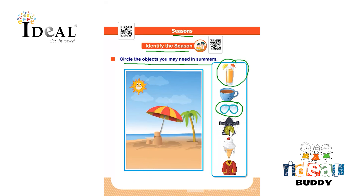Next is a raincoat — they don't need a raincoat for summer season. After that it is an ice cream, and then a jacket. They don't need a jacket for summer season. So here the child has to identify the objects in the box and identify which objects they need in the summer season.